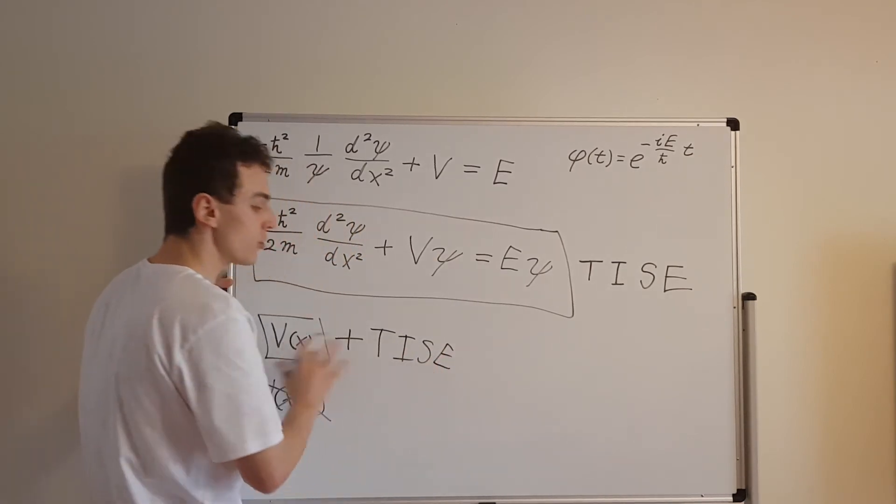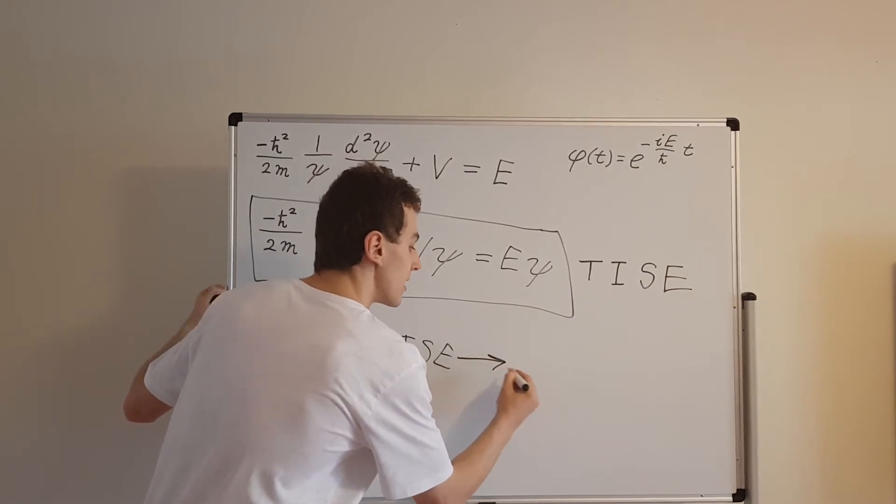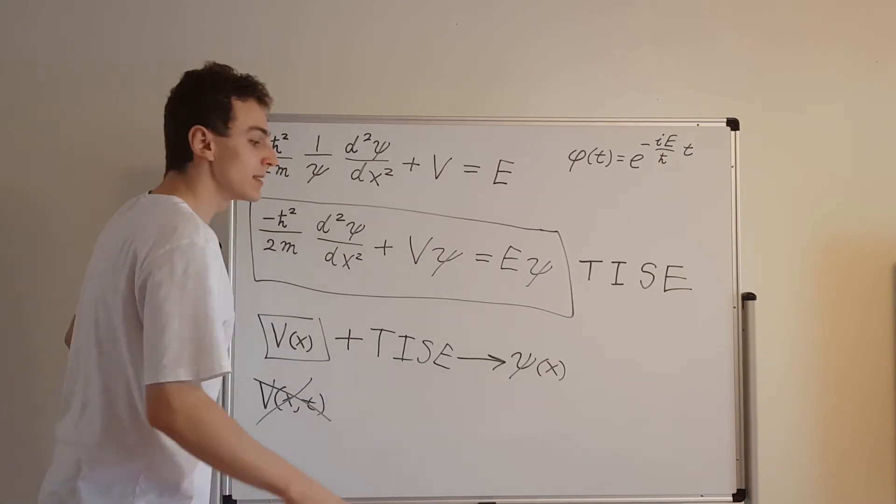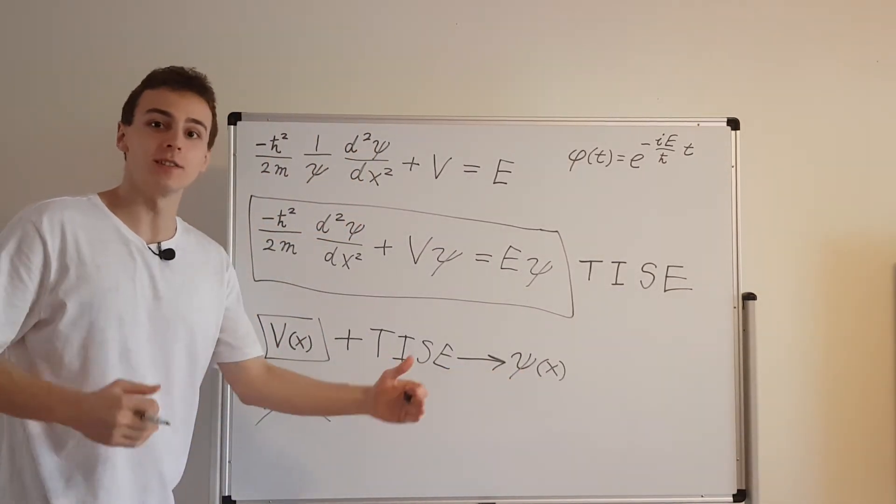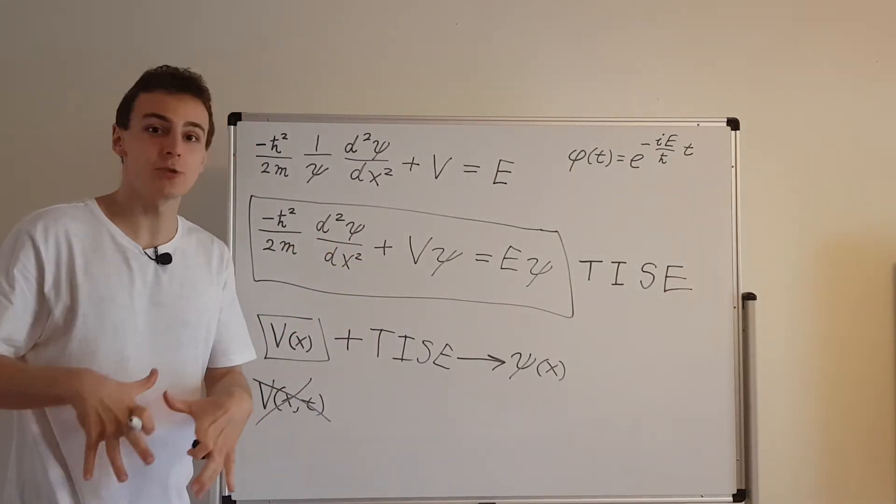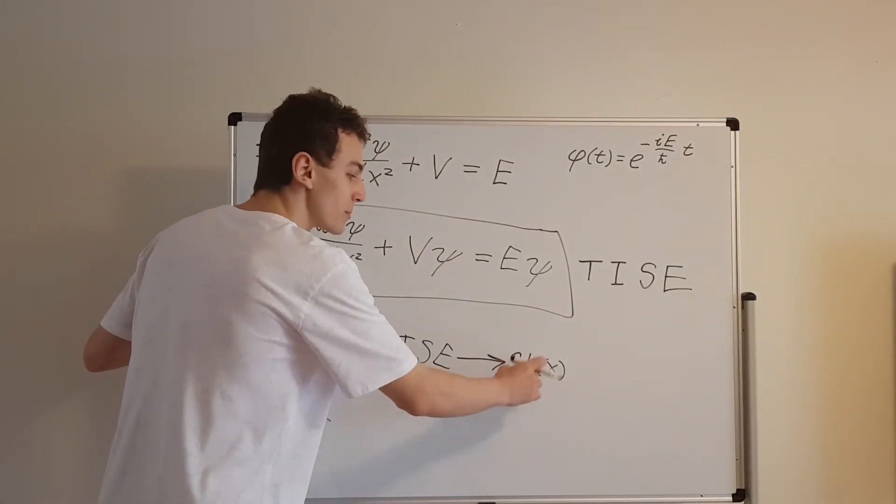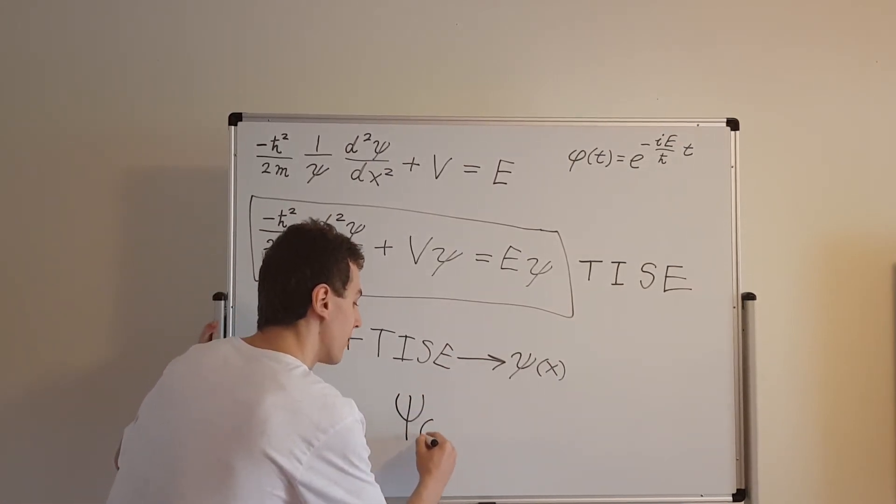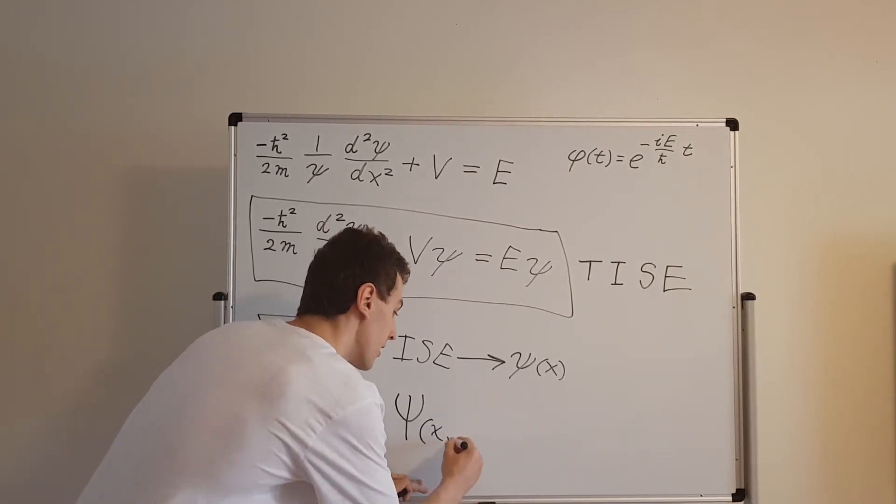We also need to have the time independent Schrödinger equation. And from these two, we can use techniques for solving differential equations, and that can give us psi of x. And often what's going to happen is psi of x is not just going to be one function. There's going to be a set of functions that satisfy this, and that set is actually going to be used to construct any possible solution. So once we know the psi of x, we can take the general capital psi, psi of x and t, this general solution to the time dependent Schrödinger equation.